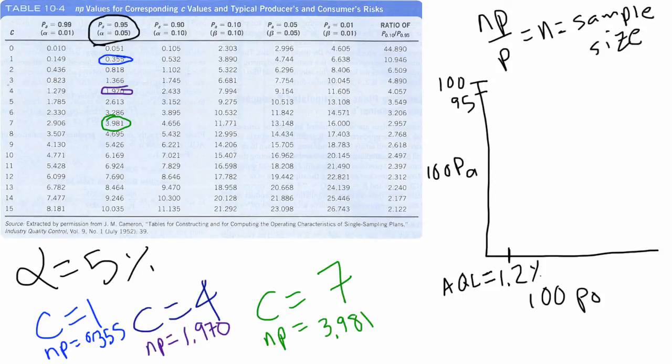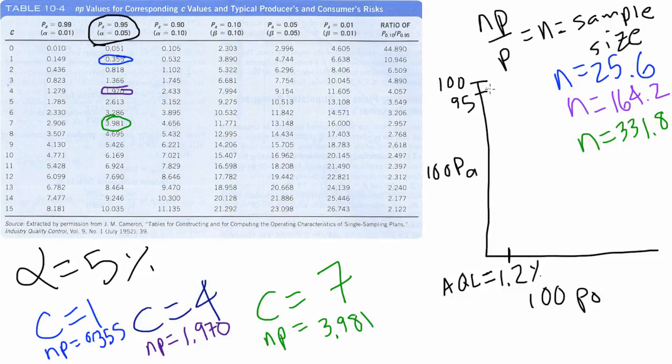So now all we have to do is divide 0.355 divided by 0.012. That'll give us 25.6. And in these cases, we round up or down to the nearest integer. So 26 samples. Then we'll divide 1.97 divided by 0.012. Then we'll divide 3.981 by 0.012.